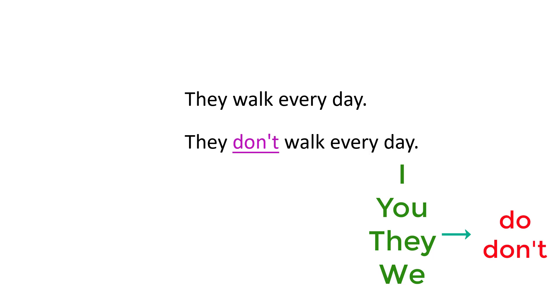Here is negative. Look at here. This sentence, they walk every day. Negative, they don't walk every day. Do plus not comes between subject and verb. Are you ready for more exercises? I know your answer is yes.